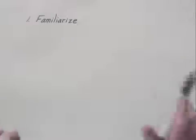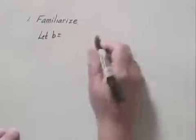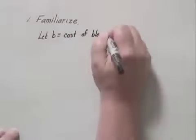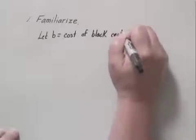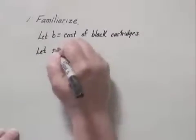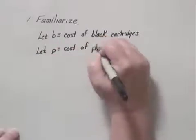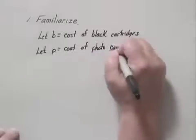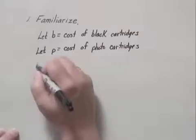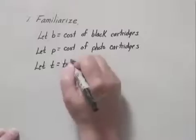To start out we will let B equal the cost of the black cartridges, and then we will let P represent the cost of the photo cartridges. And then finally, since we have to find the total cost, we'll let T represent the total cost of the purchase.